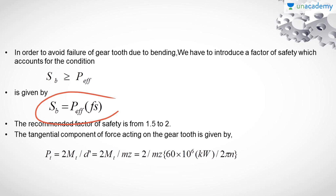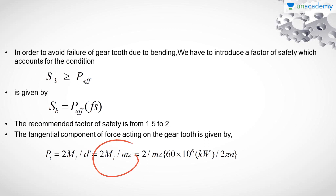The tangential component of force acting on the gear tooth is given by PD equals 2MT by D-dash, and that equals 2MT divided by MZ. So we can replace the pitch circle diameter D-dash with the corresponding value of the product of module M and Z, the number of teeth on the gear. That is why we have 2MT by MZ.